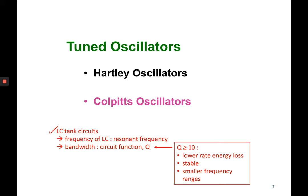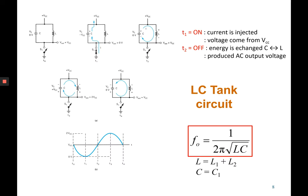Before we go for Hartley oscillators, let me explain first about LC tank circuit. This is the circuit configuration for LC tank where you put the coil and capacitor in parallel position. When the switch is off, this is the off condition. When the switch is on, the current is injected into the LC tank and voltage comes from VCC. When the current is in, that means it's the opposite flow of the voltage. When the switch is off again, the energy is exchanged between coil and capacitor and produces AC output voltage here.